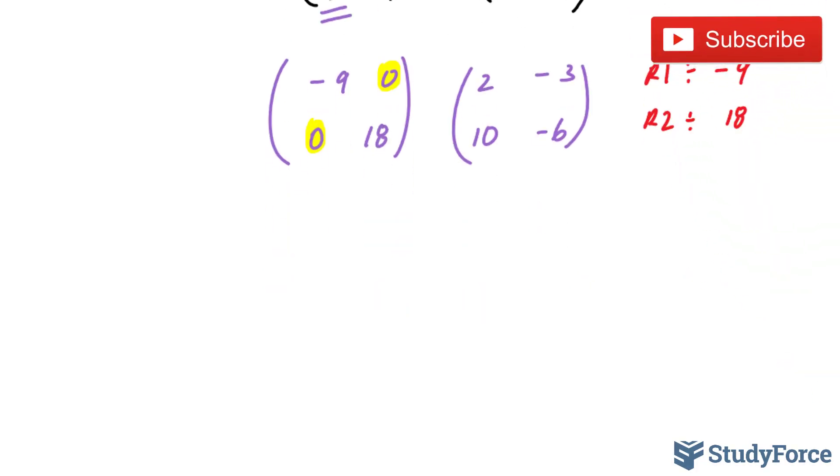If I do that successfully, negative 9 divided by negative 9 is equal to positive 1. 0 divided by negative 9 is still 0. 2 divided by negative 9 gives us negative 2 over 9. Negative 3 divided by negative 9 is positive 1 third.